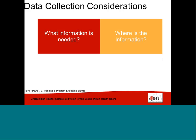Secondly, where is the information? The most common sources of evaluation information are existing documents, people, and observations. Once you have identified who or where you need to collect data from, consider what is the most efficient way to access that information. For data collection methods that require engaging program participants, consider the most effective and appropriate communication channels. For data collection methods that rely on existing documents, consider the most efficient way to retrieve the information.